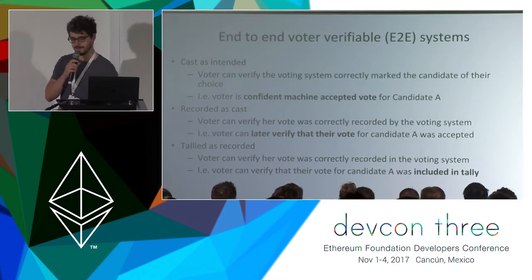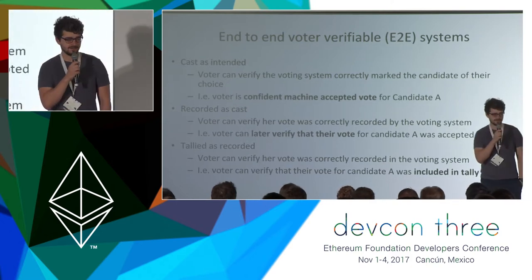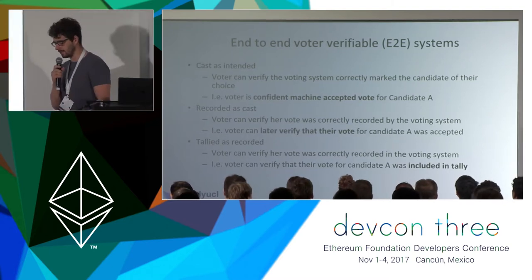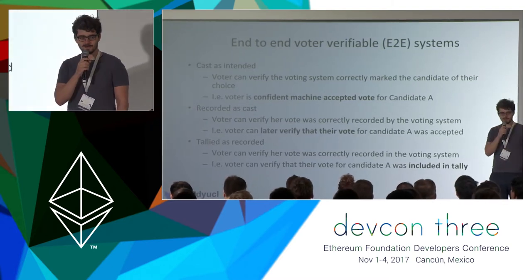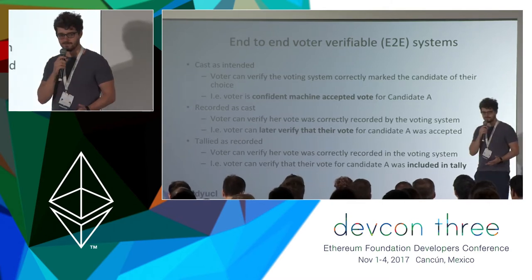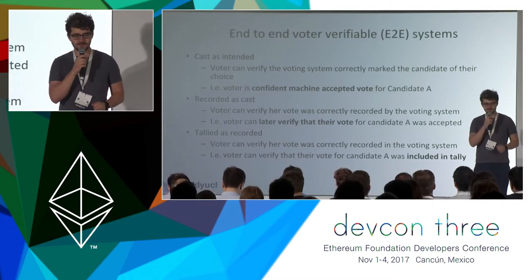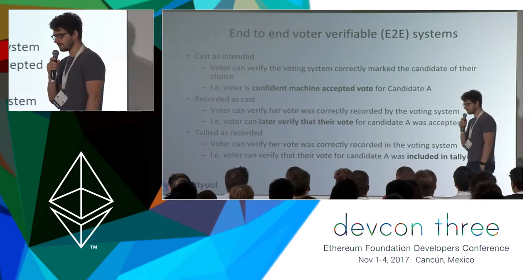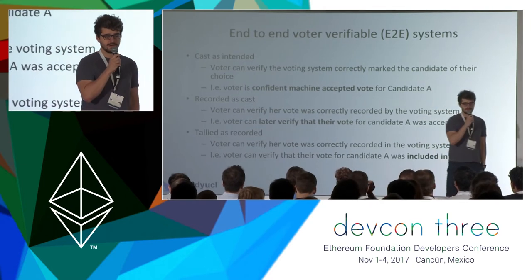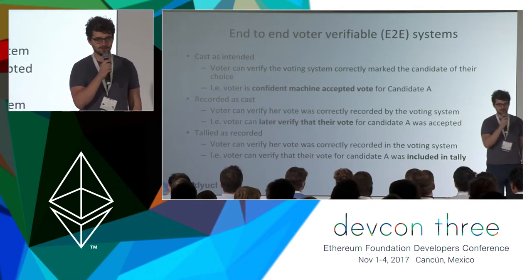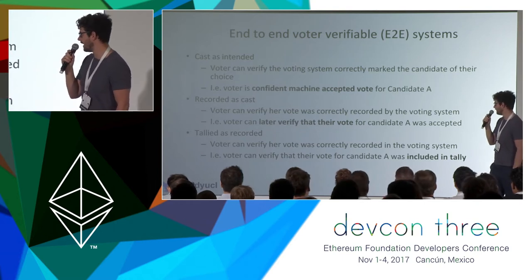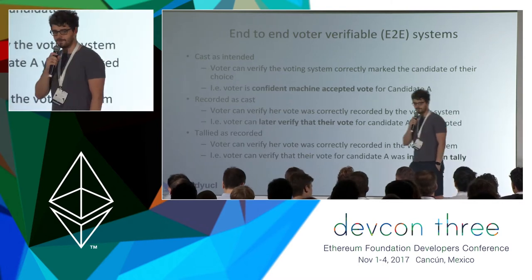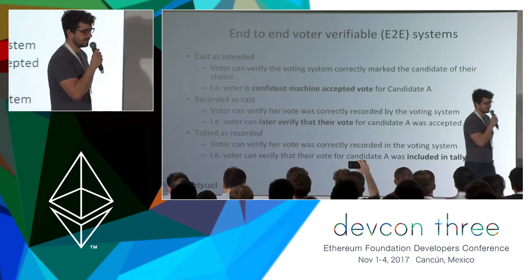This talk is going to be about e-voting, but before I really get into it I'd like to highlight what researchers tend to think about when we say e-voting. We normally think about end-to-end verifiable systems. The idea is that when I go to a polling station and cast my vote, I have confidence that my vote has been cast as intended. When I leave the polling station, I should be able to look at a public bulletin board and verify that my vote has been included in the tally. After the election, I should be able to verify that my vote was indeed included in the tally.